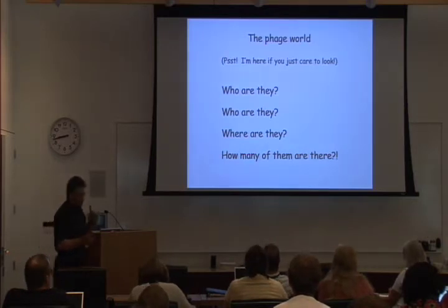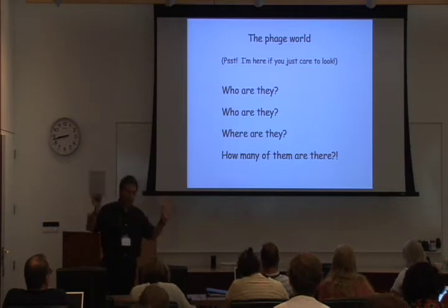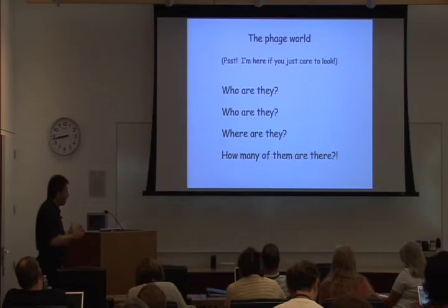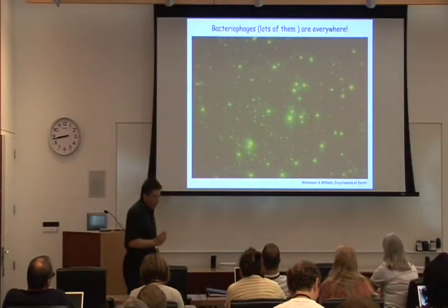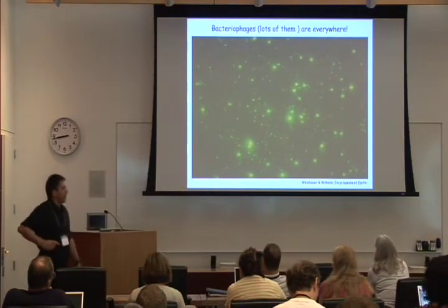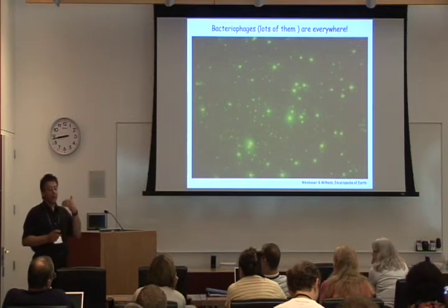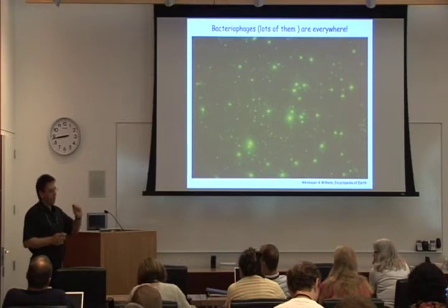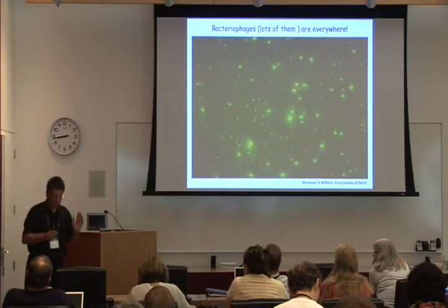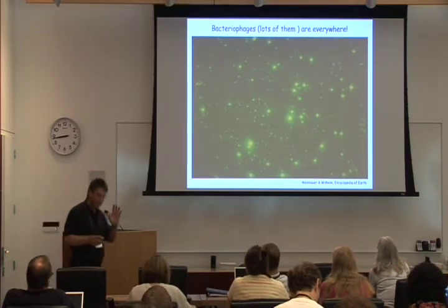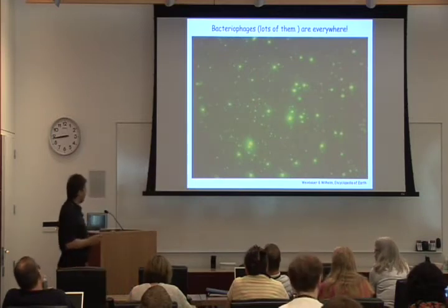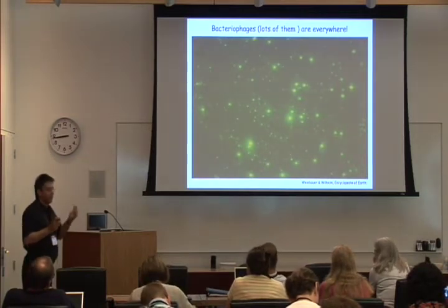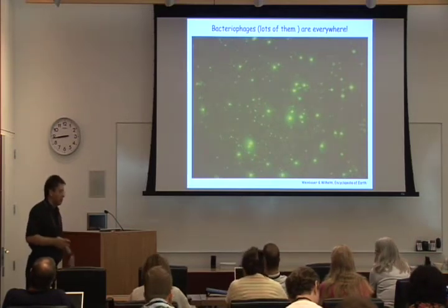I want to broaden out and think about what phages look like in the environment — how many are there and how prevalent are they? Curtis Seppel and colleagues and many different groups have utilized a fluorescent staining method, epifluorescence microscopy, to look at the presence of viral particles in environmental samples. This is an example of what they see: green dots on the slide. This is a sample of seawater that's been stained with SYBR Green, and the fluorescence enables you to see essentially the entirety of the small particles present.